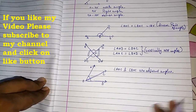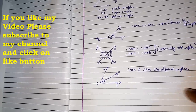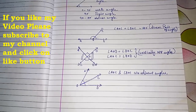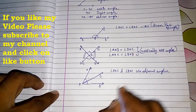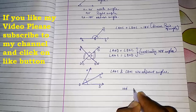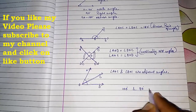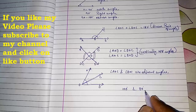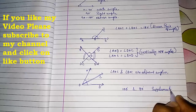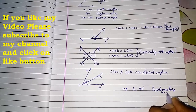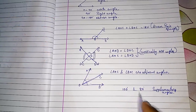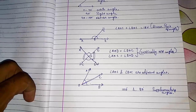These are the basic things you should know before starting lines and angles. Supplementary angles: when two angles have a sum of 180 degrees — for example, 100 and 80, or 110 and 70 — any two angles whose sum is 180 degrees are called supplementary angles.